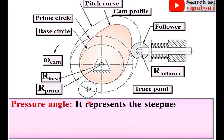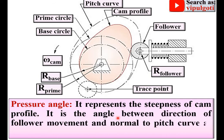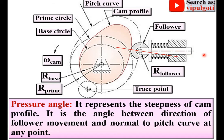Next: pressure angle. It represents the stiffness of the cam profile. It is the angle between the direction of the follower movement and the normal to the pitch curve at any point. Here you can see the normal to the pitch curve at a given point, and the follower movement direction — the angle between these two is known as the pressure angle.